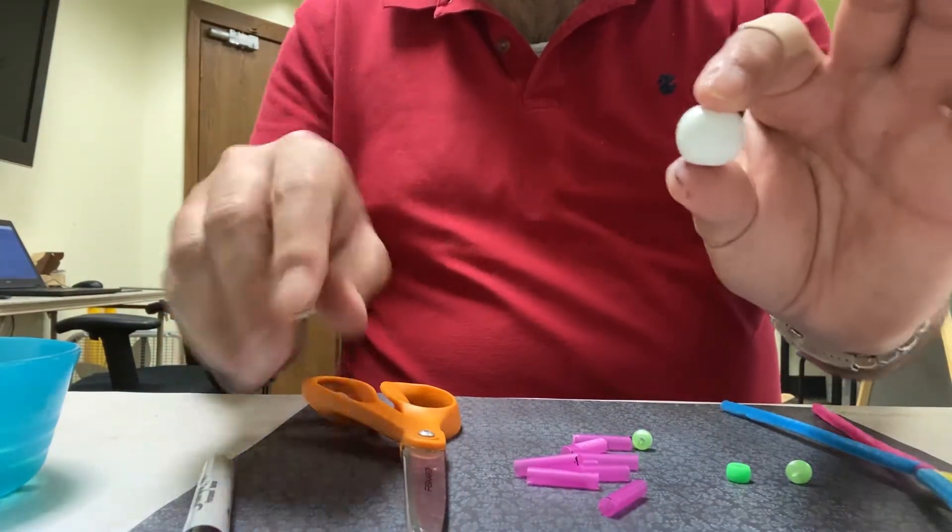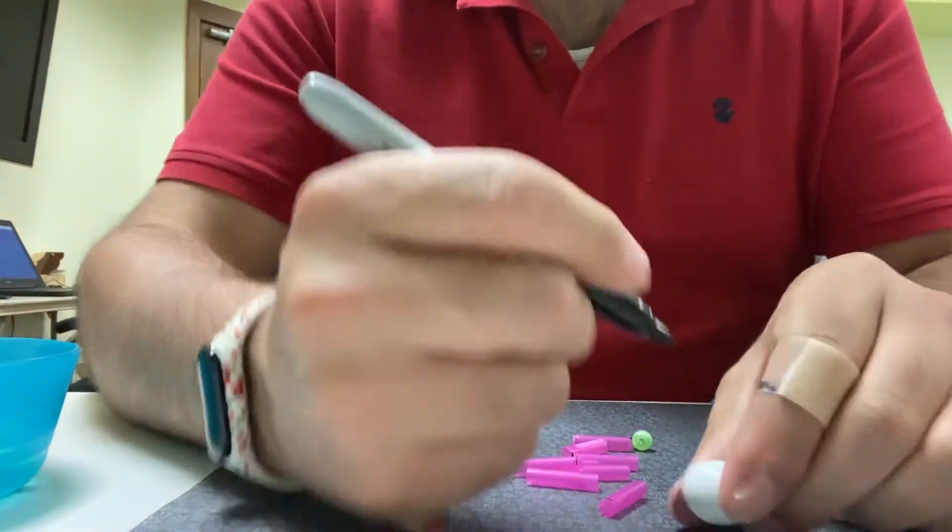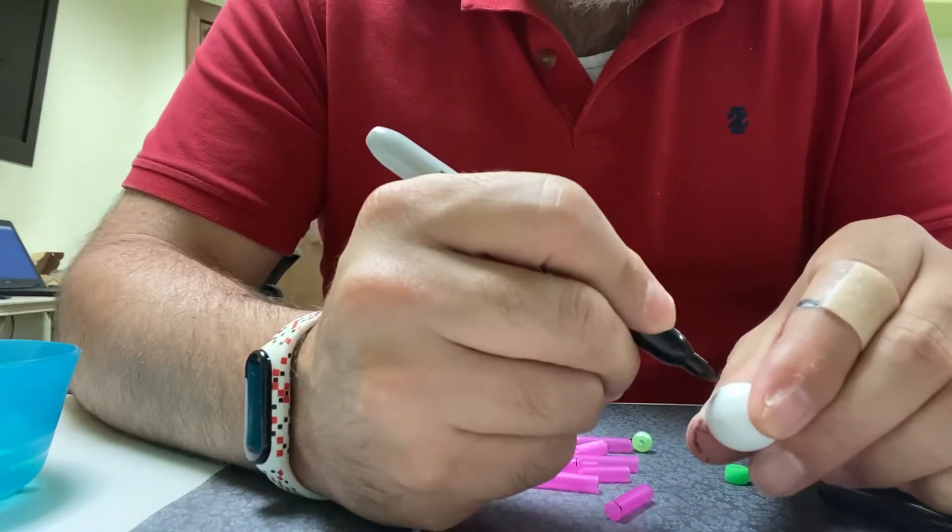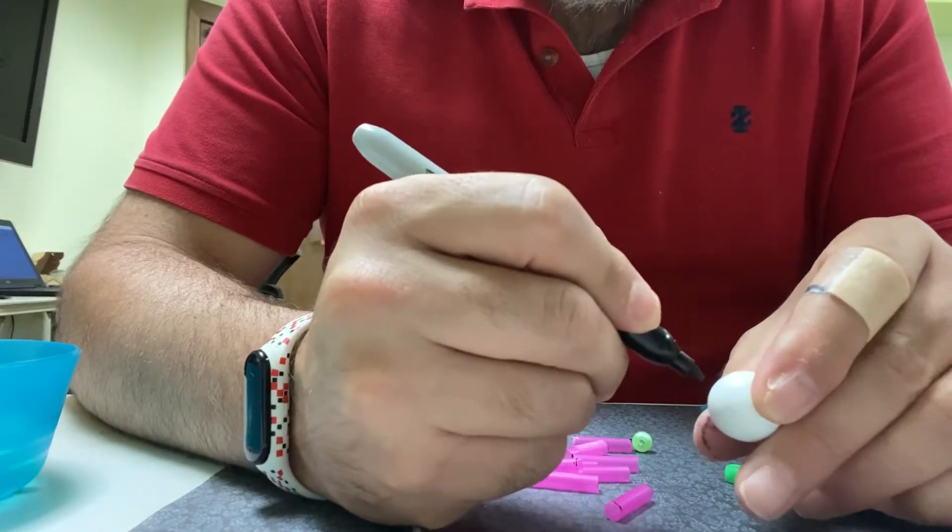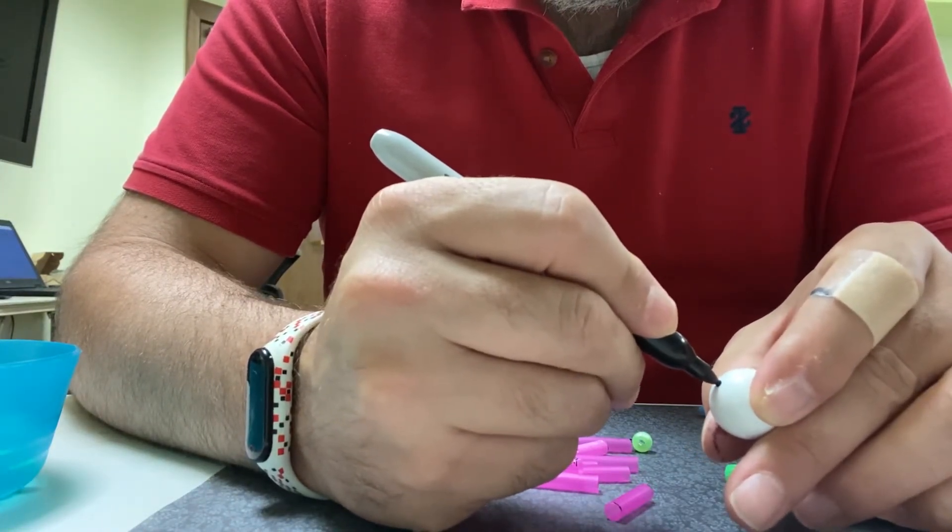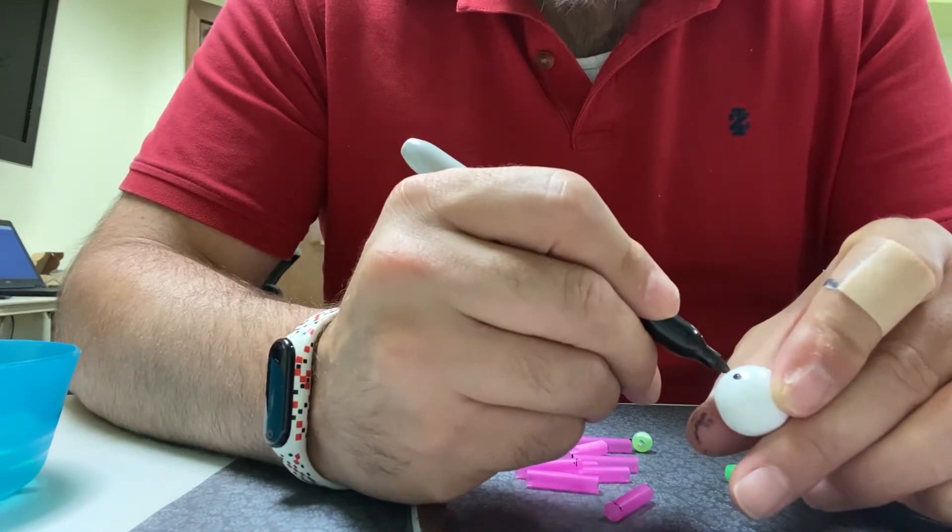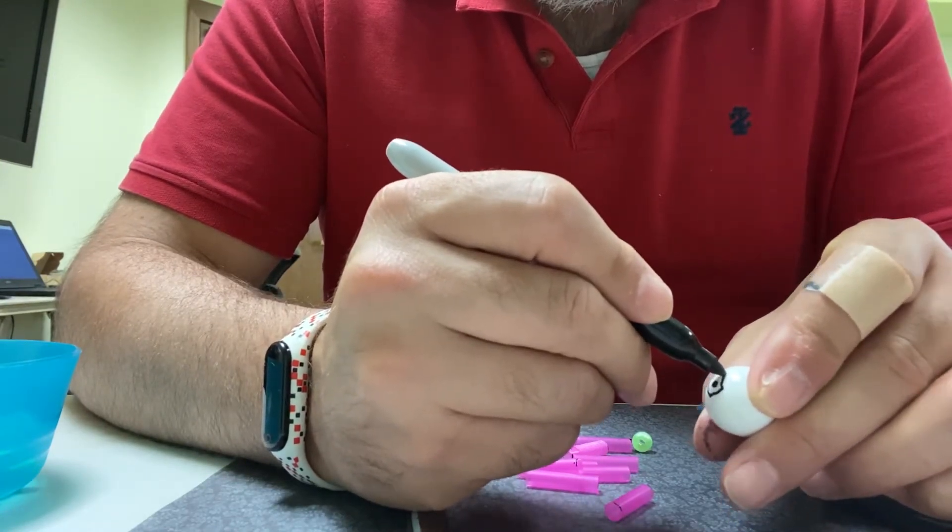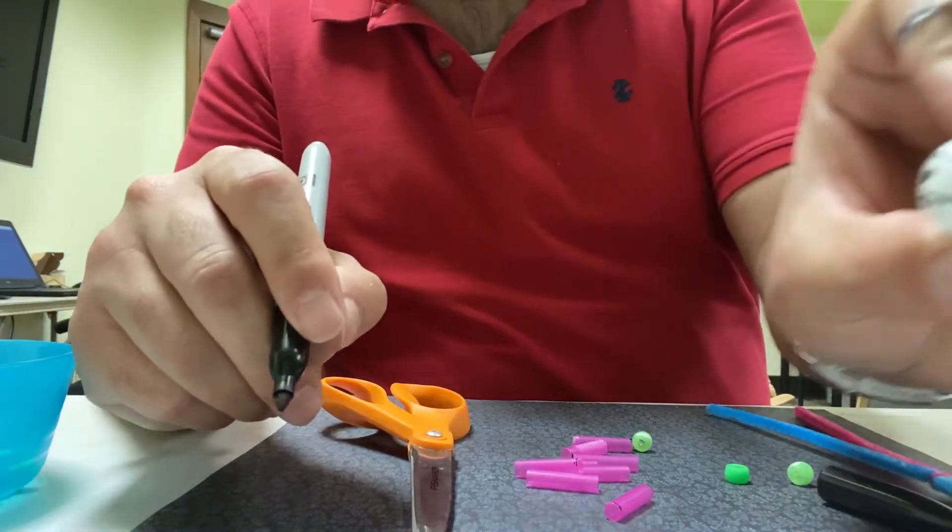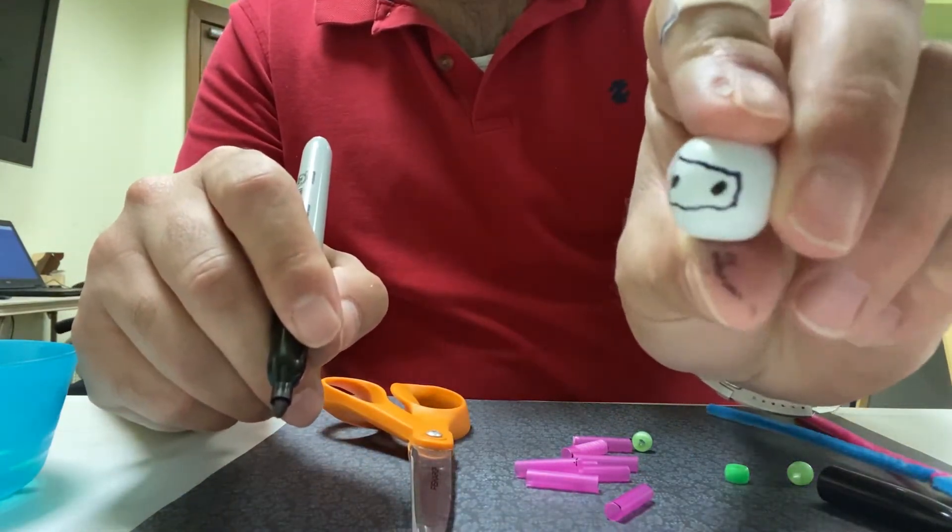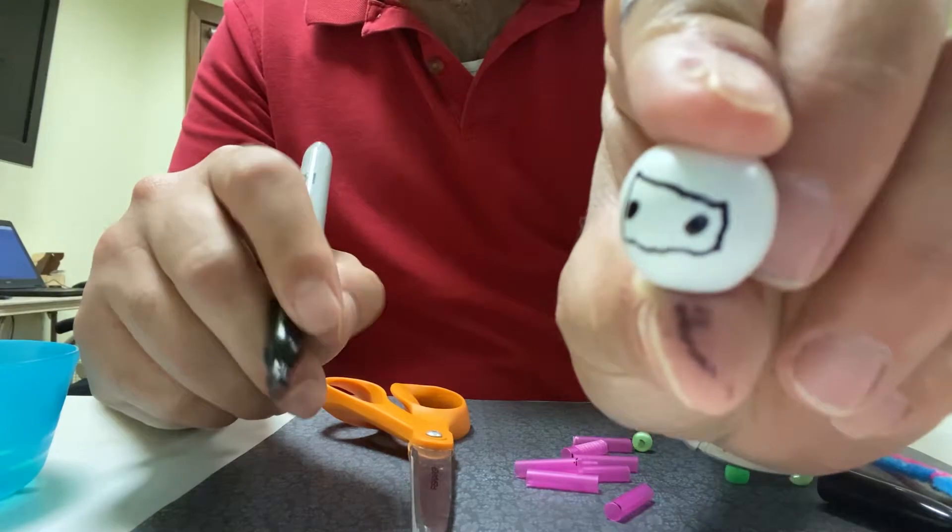Now this big bead is going to be your ninja's head so I'm going to put eyes on mine with a sharpie. Make a big eye and a big eye and then I'm going to make a square around it so it looks like it's peeking out of a ninja mask. There we are.